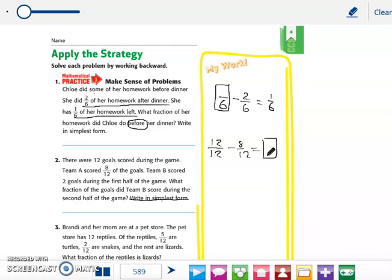Okay, and then Team B scored 2 goals. So that's going to be 2 out of 12. And then you're going to get what fraction of the goals did Team B score during the second half. Does that make sense?